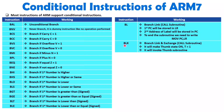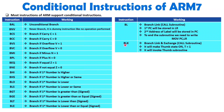Let us understand BLX — branch link and exchange. That is also a subroutine, but this subroutine happens with thumb state on. The T bit will be equals to 1, and this will invoke a thumb subroutine. In thumb state, instructions are 16 bits, whereas in ARM state instructions are 32 bits. So if you have a memory constraint, you can have the subroutine with thumb state on, and in that situation you execute BLX.